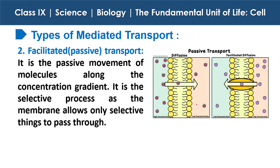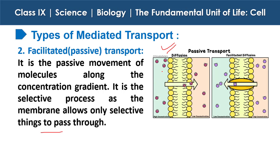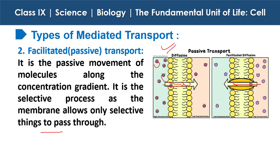Next is facilitated or passive transport. It is the passive movement of molecules along the concentration gradient. It is a selective process, as the membrane allows only selective things to pass through. As you can see here, it is allowing only selective substances to pass inside, not all substances — some selective substances are passing inside the cell and some selective substances are getting out of the cell.